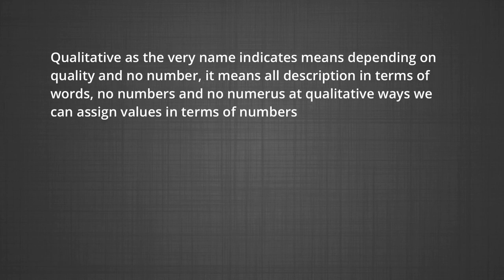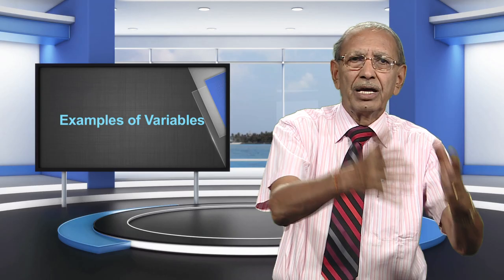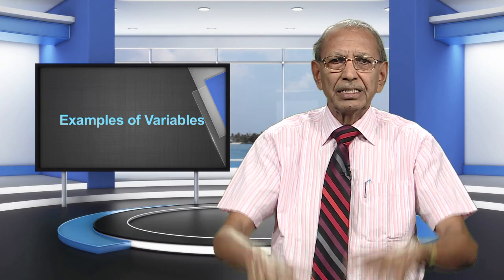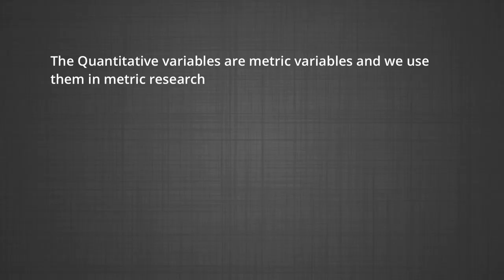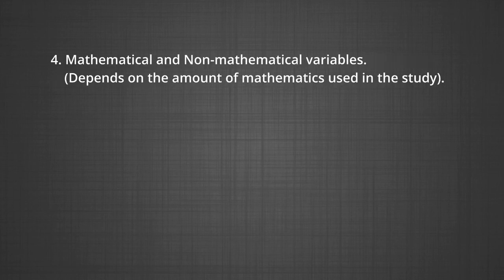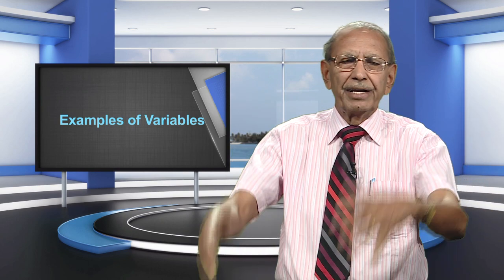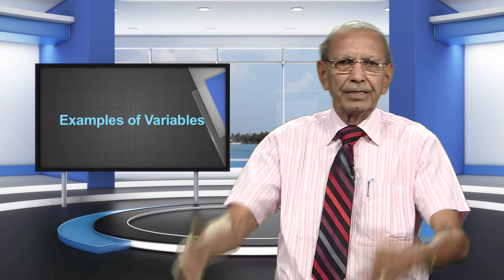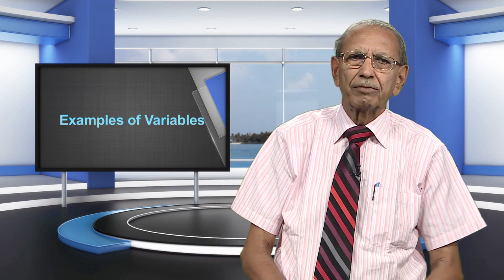There is another classification: qualitative and quantitative variables. Qualitative, as the very name indicates, means depending on quality with no numbers — description in terms of words, no numerals. Quantitative means we can assign values in terms of numbers and numerals, and we can do further statistics on that. Quantitative variables are metric variables used in metric research. Then we have mathematical and non-mathematical variables — this depends on how much mathematics has gone into the research. A variable becomes a mathematical variable where a lot of mathematics has been used, and a non-mathematical variable where no mathematics has been used.